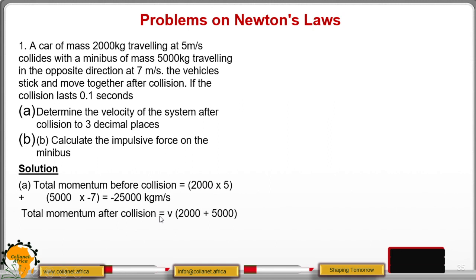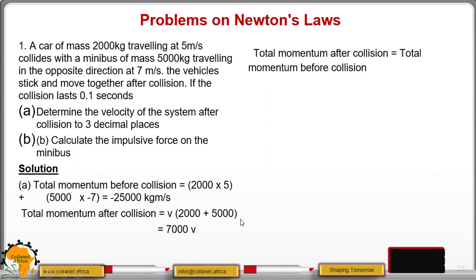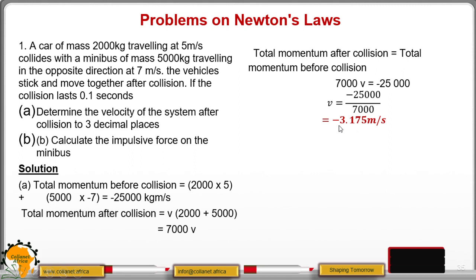Now the total momentum after collision — because the two bodies are colliding and moving with a common velocity — we get the mass as the sum of the two masses, m1 plus m2. So it will be 2000 plus 5000, you get 7000. Then you multiply by the common velocity v, which implies that the total momentum after collision equals the total momentum before collision, giving us 7000v equals negative 25,000. To get v, you divide through by 7000, and that gives you negative 3.571 meters per second.